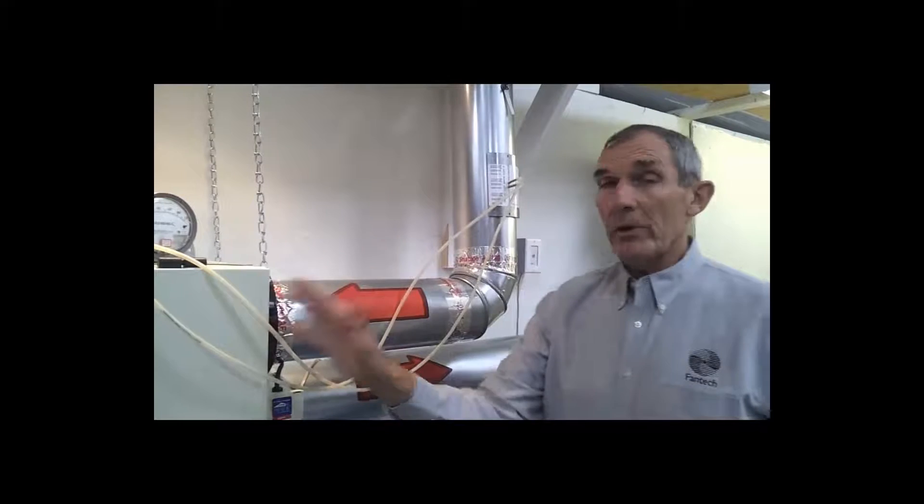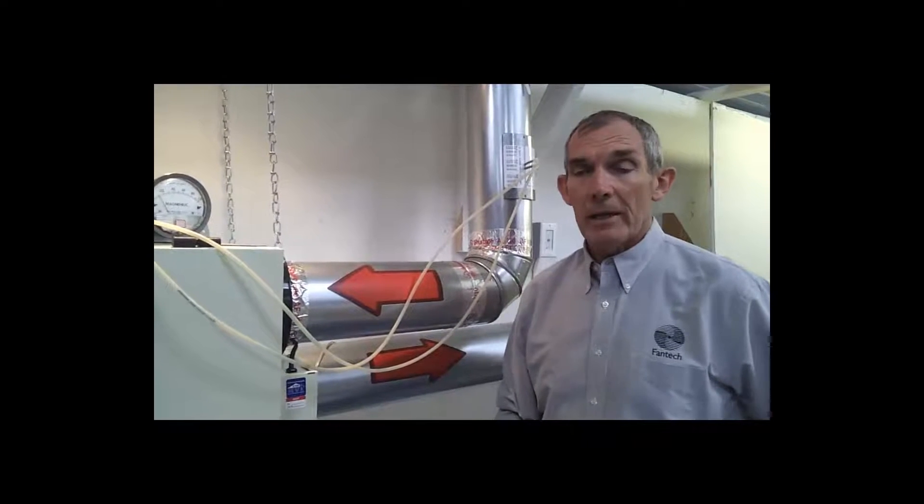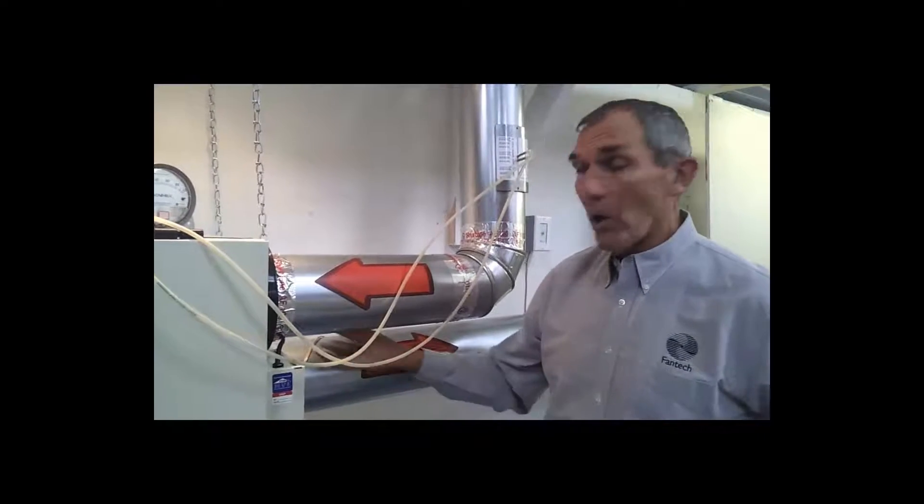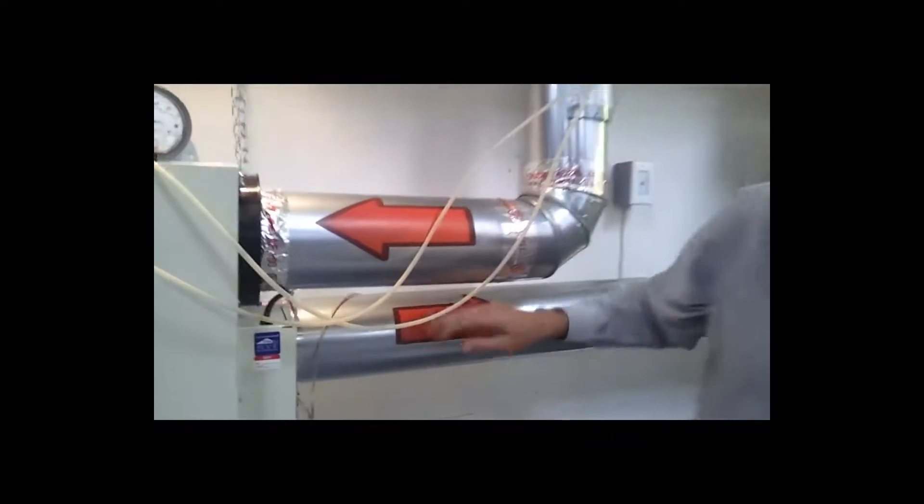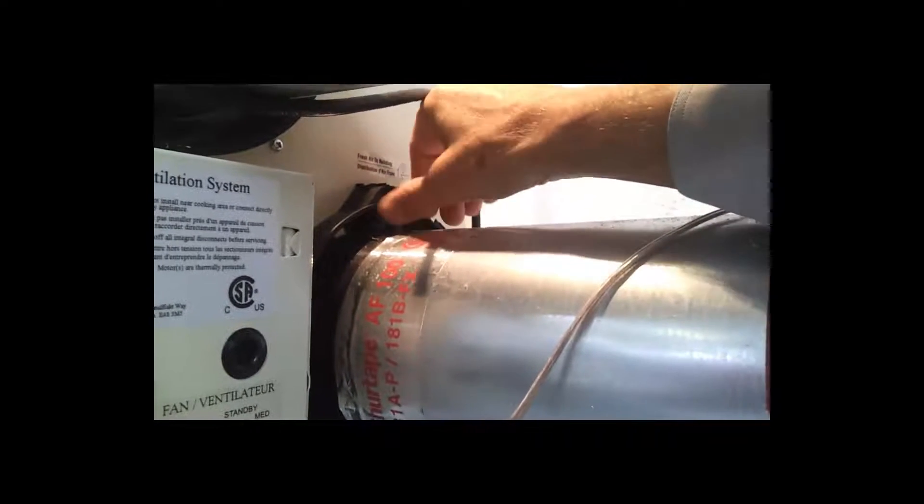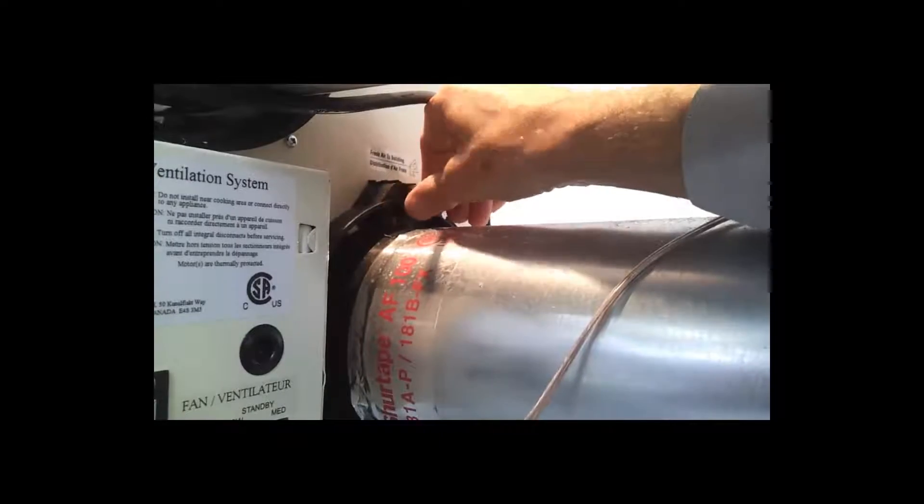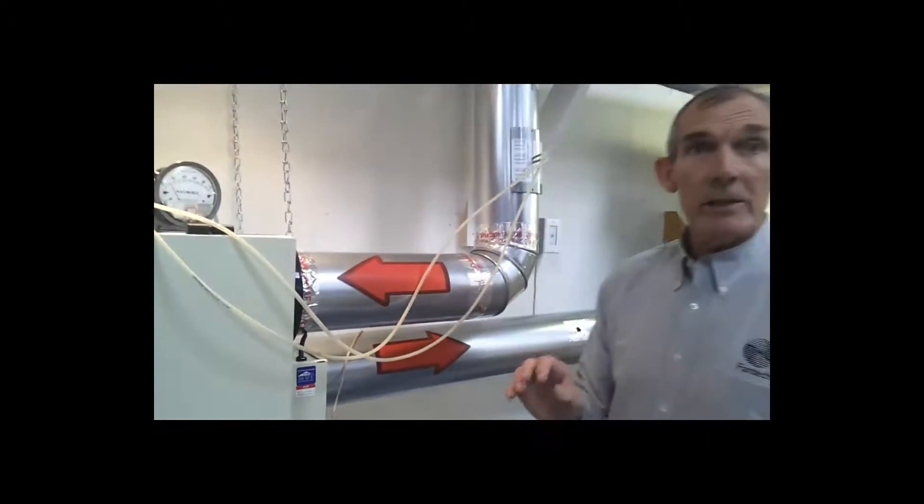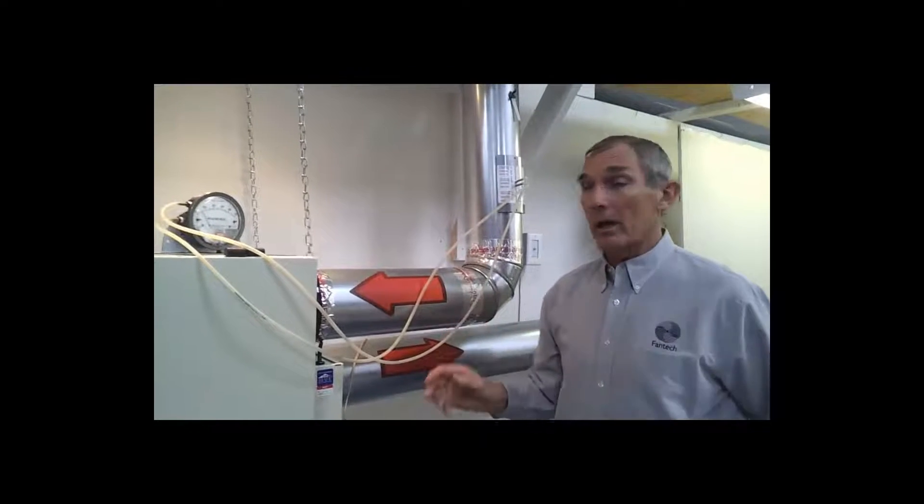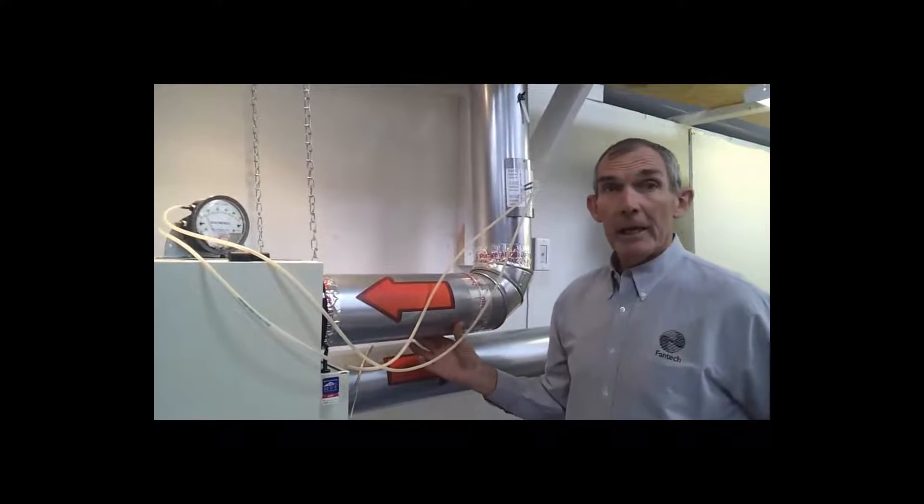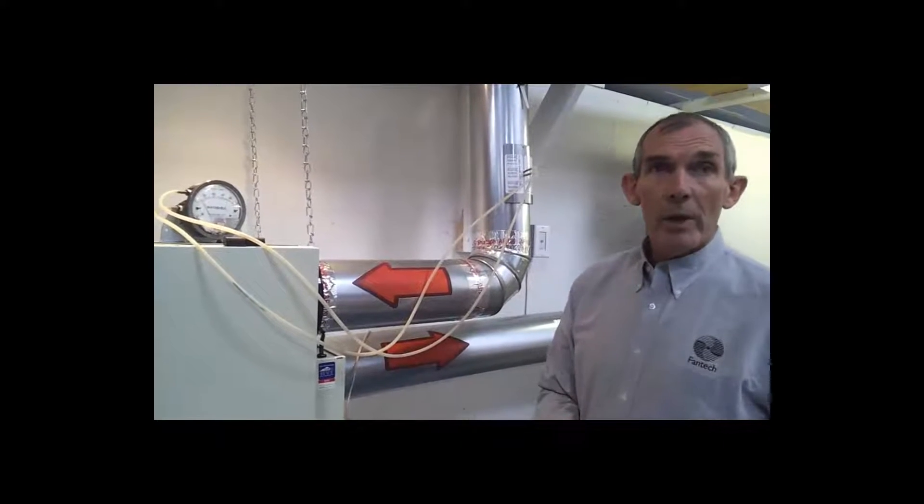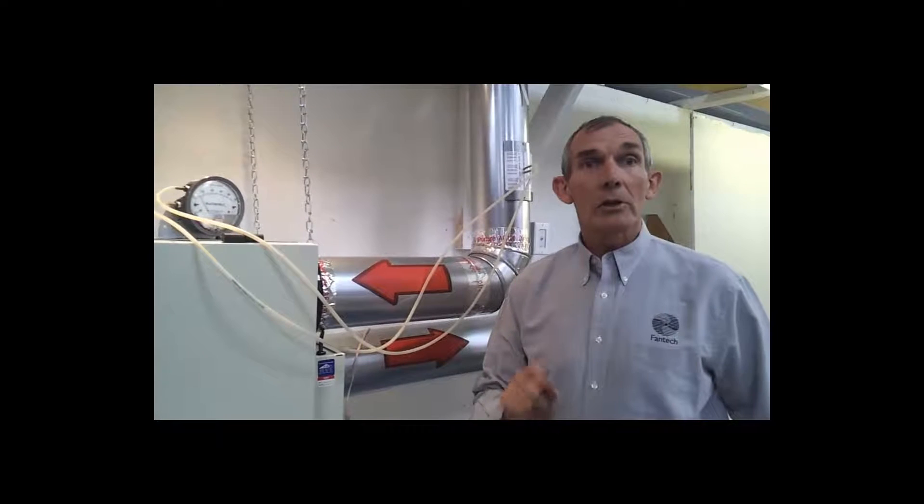With all Fantec HRVs or ERVs, it has its own integral balancing damper on the supply side. Down here we have a screw-type balancing damper that opens or closes. Only in this case, we see that the high side or pressure is on the return side. In this case, what we have to do is insert a balancing damper.